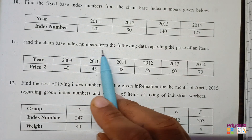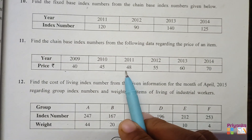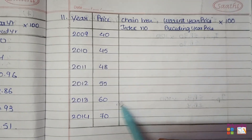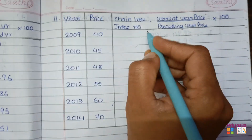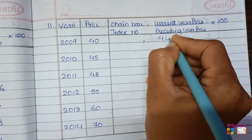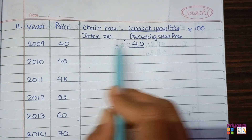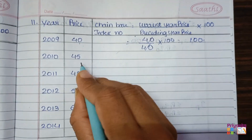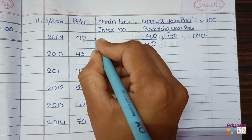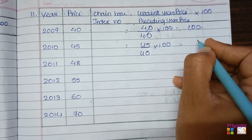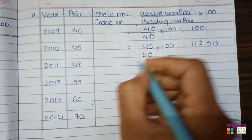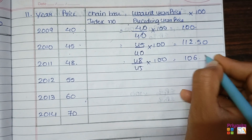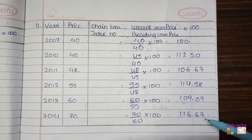Question 11: Find the chain base index number from the following data regarding the price of an item. Take all the information into the table and write down the formula. For the base year, current price is 40 and preceding year price is not given, so we take 40; 40 ÷ 40 × 100 = 100. For 2010: current year is 45, preceding year is 40; 45 ÷ 40 × 100 = 112.50. For 2011: 48 ÷ 45 × 100 = 106.67. The remaining values are calculated similarly.